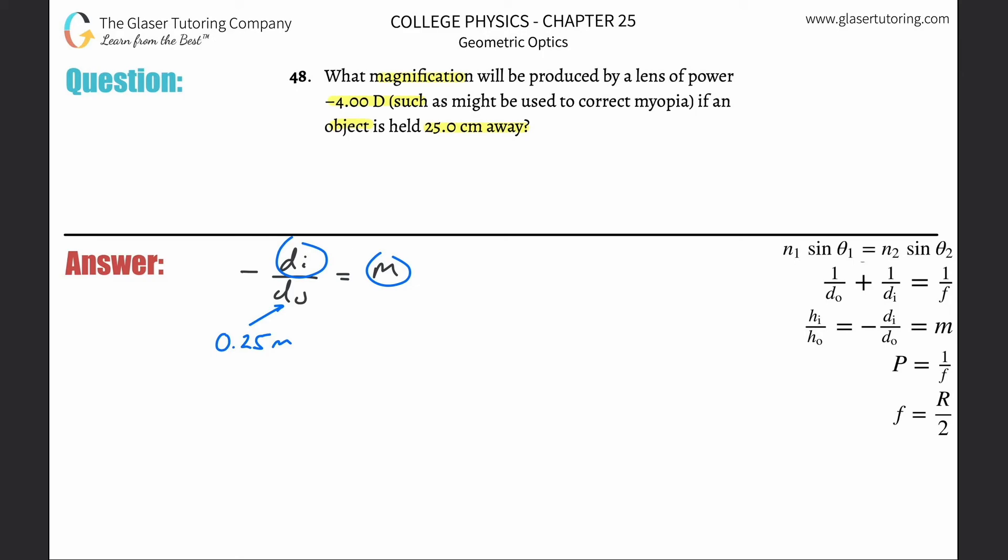In order to calculate magnification, I need the image distance. They didn't give it to me - they gave me the diopter, the power. So I go to power and realize that power is just the inverse of the focal length. So if I know the power, I can simply solve for focal length by taking the inverse of it.